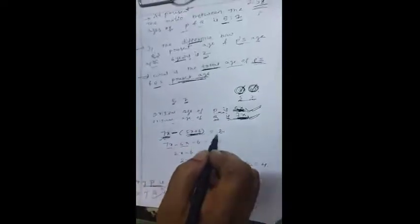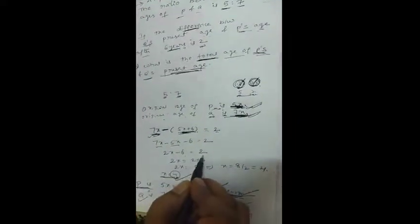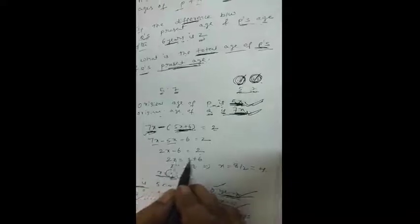So 7x minus (5x plus 6) equals 2. So 7x minus 5x minus 6 equals 2. So 2x minus 6 equals 2. So 2x equals 2 plus 6. So 2x equals 8. So x equals 8 by 2 that equals 4.